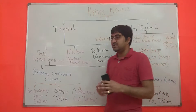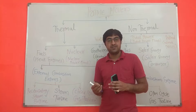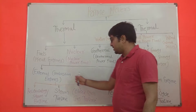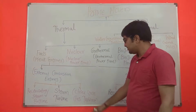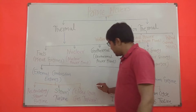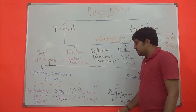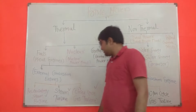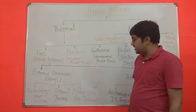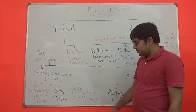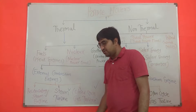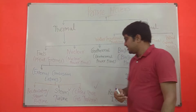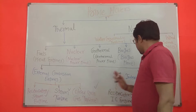The main component of the Rankine cycle is the boiler — a closed pressure vessel in which steam is produced and used to rotate the turbine. Another subtype is the closed cycle gas turbine, where combustion takes place outside, the pressure of the gas is increased, and the gas expands through the turbine blades to produce power. However, practically the open cycle gas turbine is used.